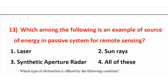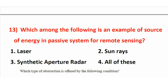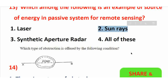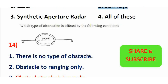Which among the following is an example of a source of energy in a passive system of remote sensing? In remote sensing, there are active sensors and passive sensors. In a passive system, the source of energy is natural. The right answer is option 2 — the sun (sunrise). The sun is the natural source of energy for passive remote sensing.